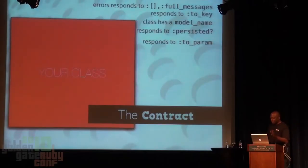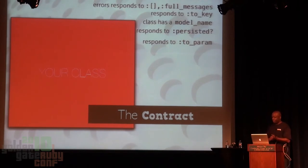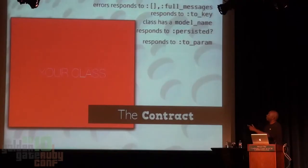So Active Model is a contract. It says you will do these five things. All you need to do is have some kind of errors object with the right messages, respond to a few other methods, and have a model name method on your class. That's it — it's actually very, very simple. And believe it or not, you don't have to use Active Model itself to have Active Model support for your app — you just need to implement something that fulfills this interface.